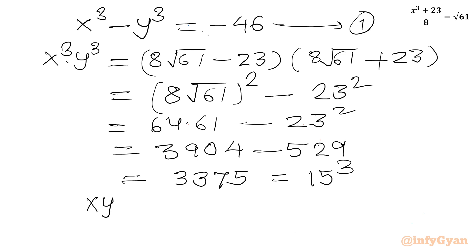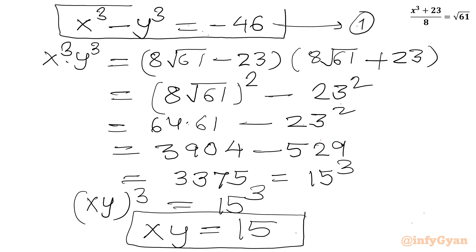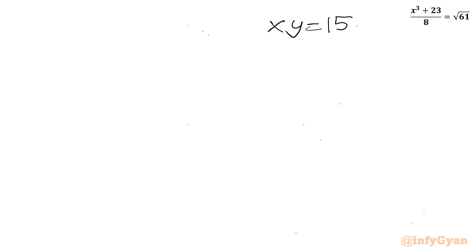So (xy)³ = 15³, giving xy = 15 (Equation 2). Combined with Equation 1, we have the system: x³ − y³ = −46 and xy = 15.